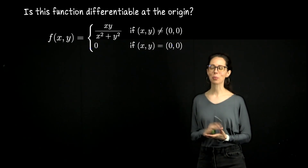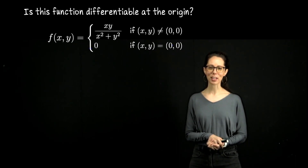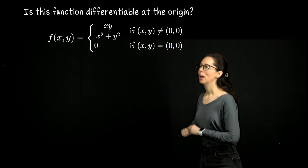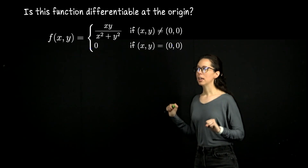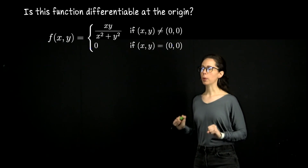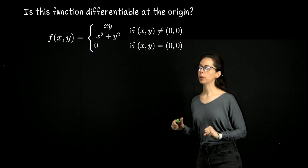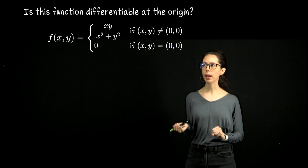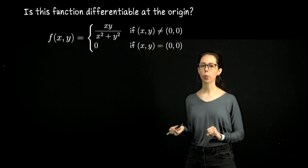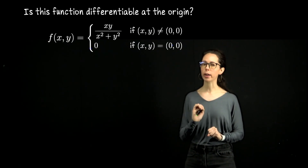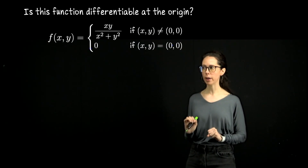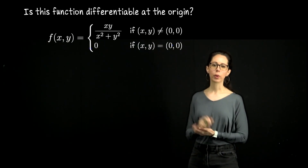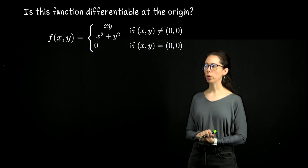Here's a theorem we could have used that will give us the conclusion faster — please watch both. This function is piecewise defined. f(x, y) equals x times y divided by x² plus y² whenever x and y are not both zero, and it equals zero when x and y are at the origin.